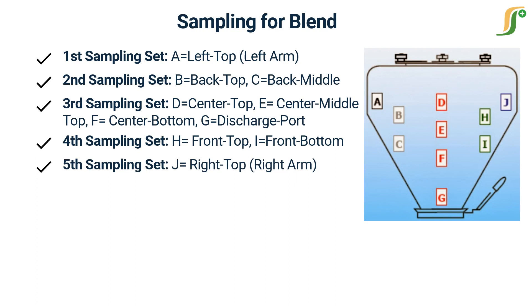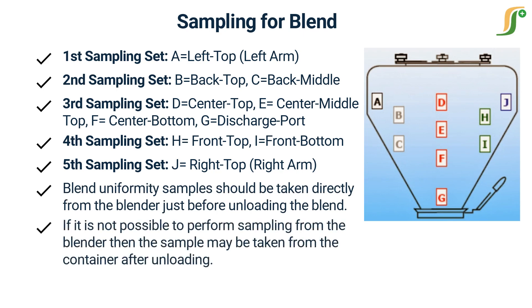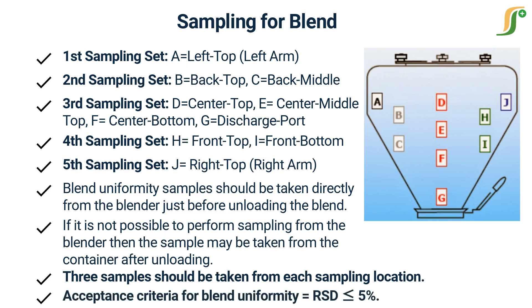Blend uniformity samples should be taken directly from the blender just before unloading the blend. If it is not possible to perform sampling from the blender, then the sample may be taken from the container after unloading. Three samples should be taken from each sampling location. The acceptance criteria for blend uniformity is RSD less than five percent.